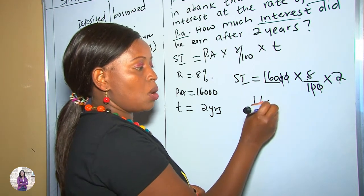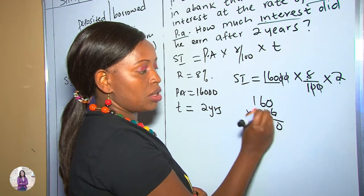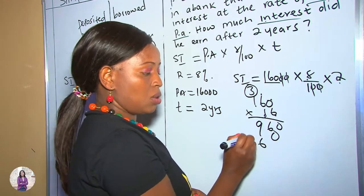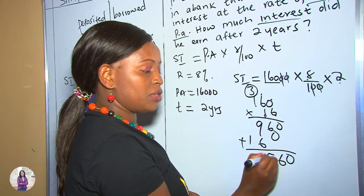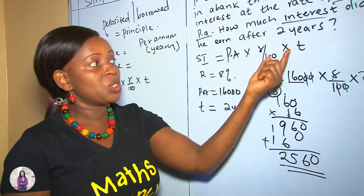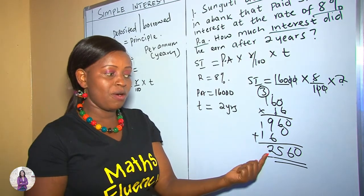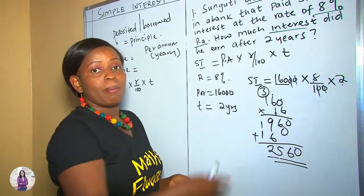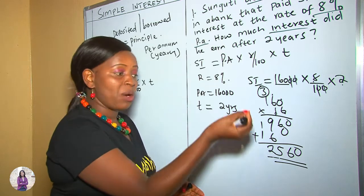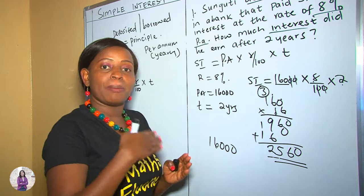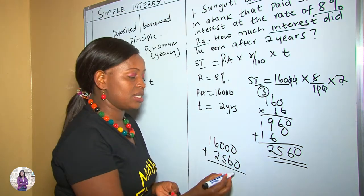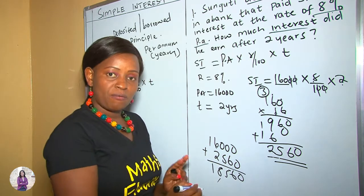160 times 16 gives us 2,560. This is the simple interest. Because Guten deposited 16,000, after two years this money has generated a profit of 2,560. We have answered our question. But we can also want to know — at the end of the two years, how much do we withdraw from the bank account? You take whatever you deposited, which is 16,000, plus the profit the money generated, which is 2,560. Therefore in total, when he goes to withdraw his money after two years, it will come to 18,560. You see how important it is to keep money in your bank instead of keeping it in your house — it is generating profit.